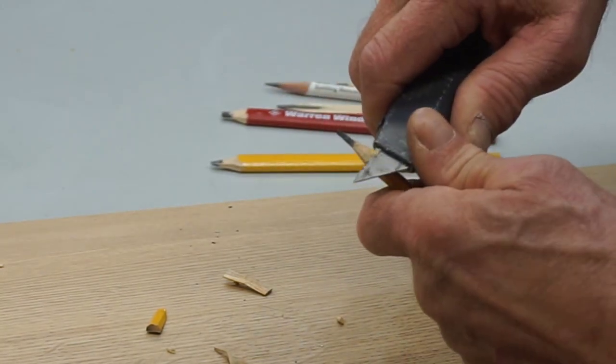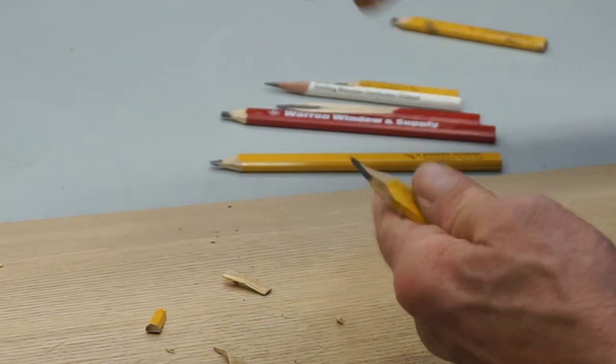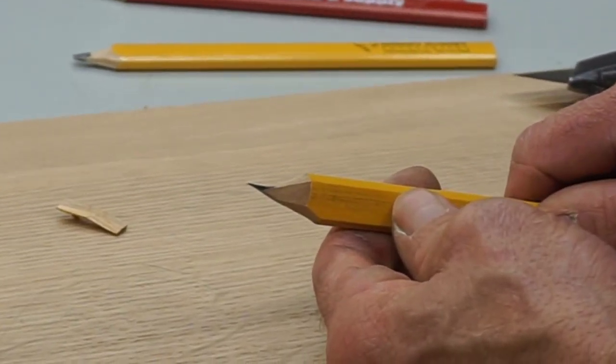These extra passes just to kind of clean things up. And that is what I call the offset scribe point.